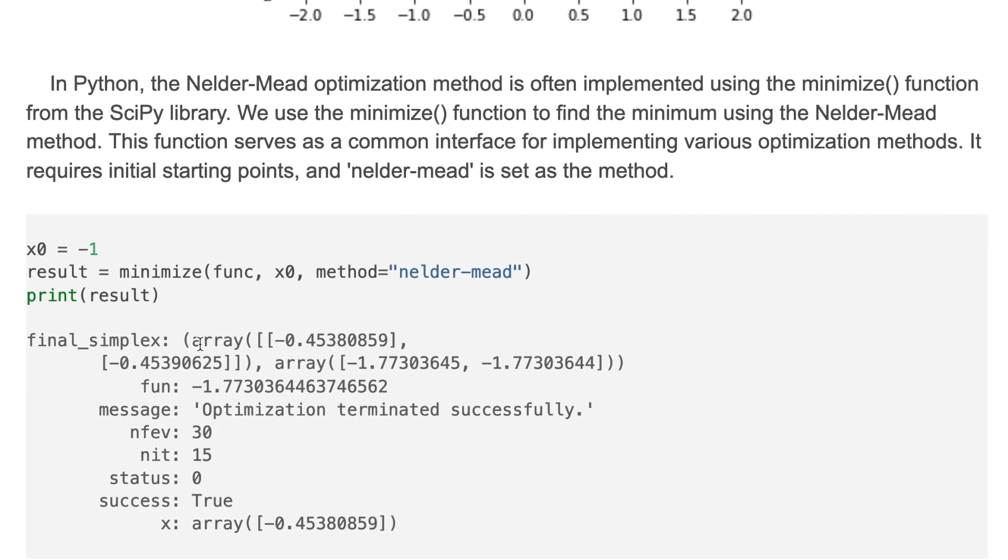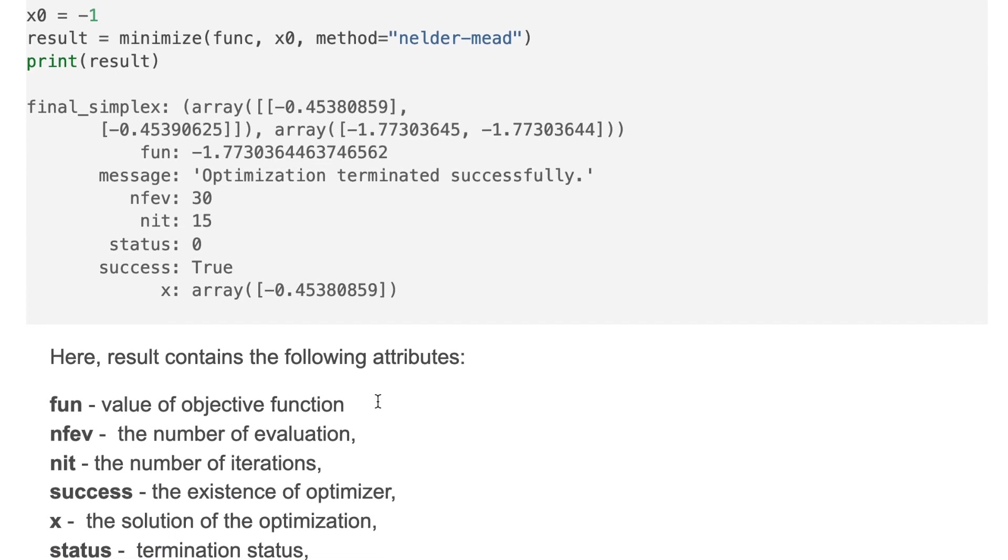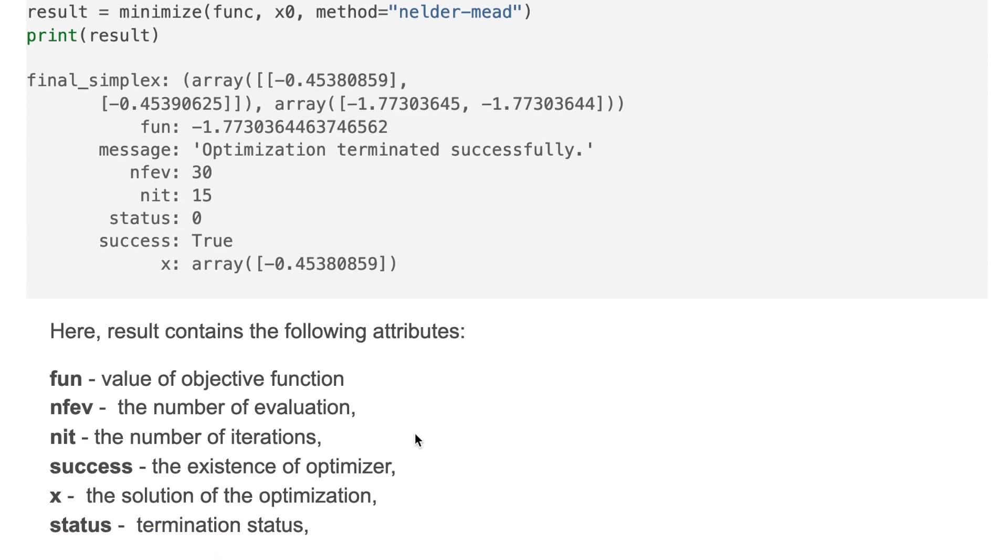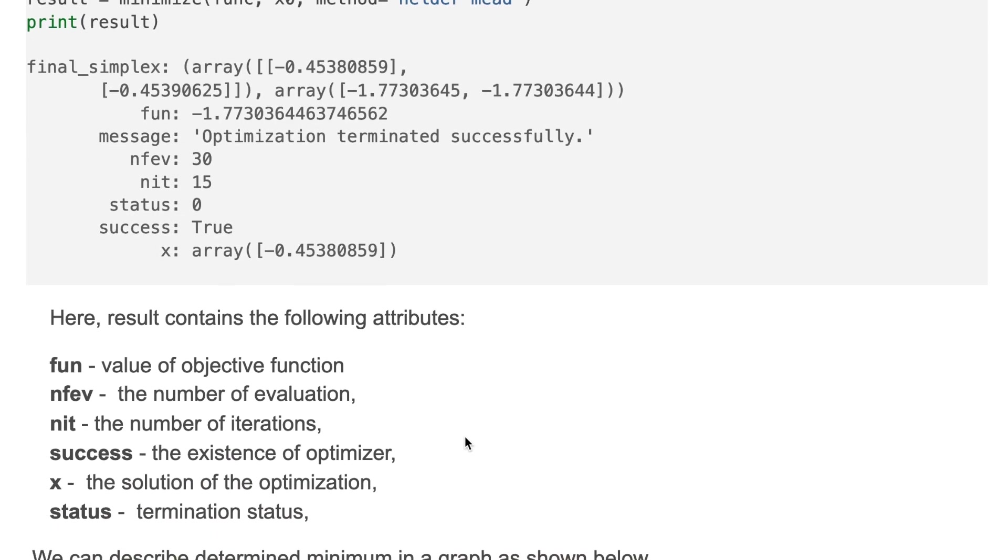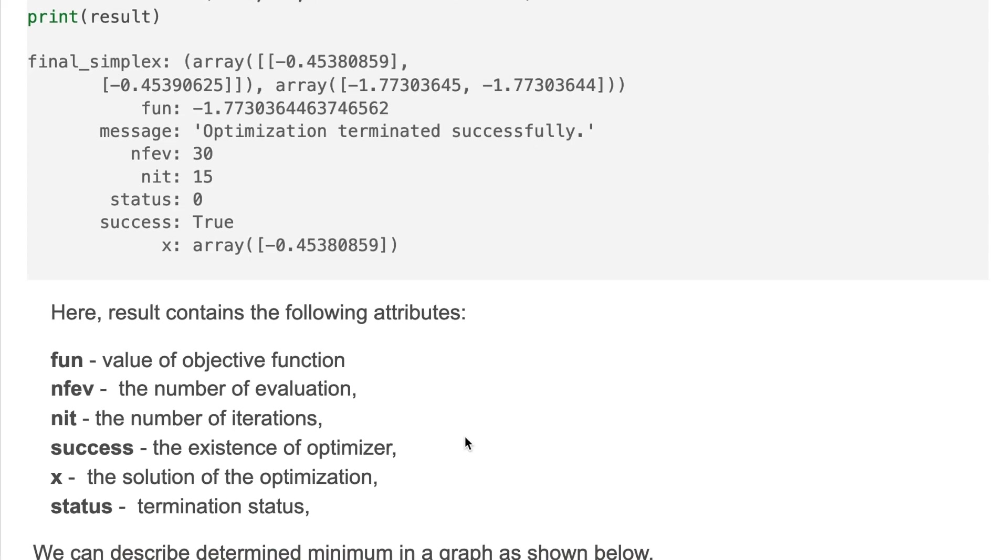You can print the result and the result contains the following attributes: the value of objective function, the number of evaluation, the number of iterations, and etc.